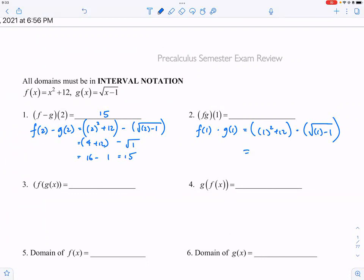If you see something, the square root of one minus one is going to be square root of zero, which is zero. So the whole thing becomes zero. That's very nice.